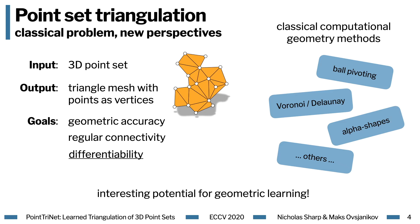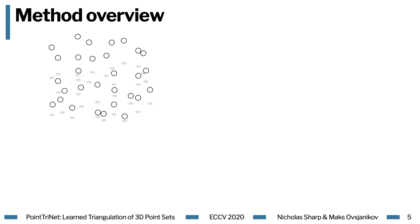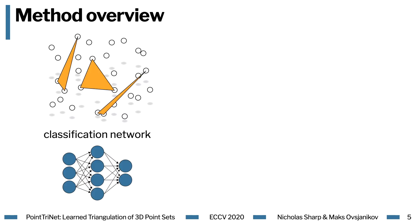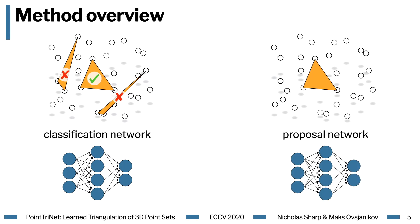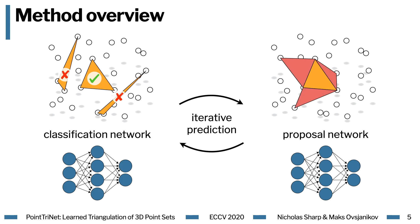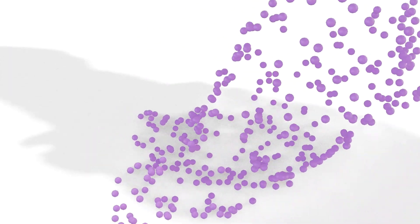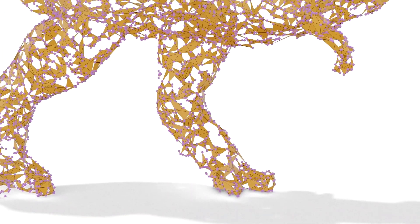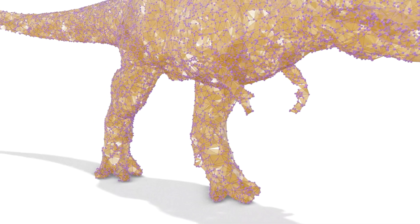Generating point clouds is straightforward, so if we can directly and differentiably triangulate them, we open up all sorts of promising strategies for working with meshes in deep learning. Our formulation makes use of two separate learned networks. The first is a classification network, which predicts whether a triangle belongs in the generated mesh or not. The second is a proposal network, which suggests new candidate triangles. PointTriNet iteratively applies these two methods: given some point set, we begin with arbitrary seed triangles, alternate between classifying and proposing triangles, and eventually find a coherent triangulation of the point set.